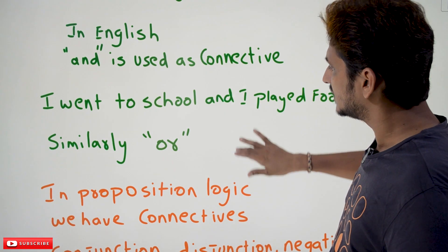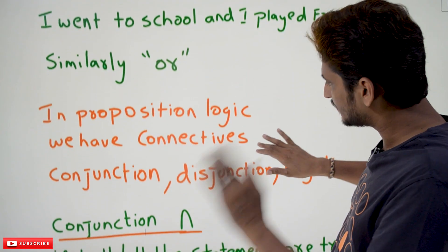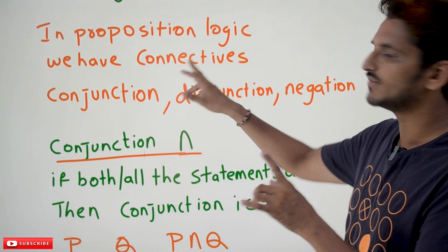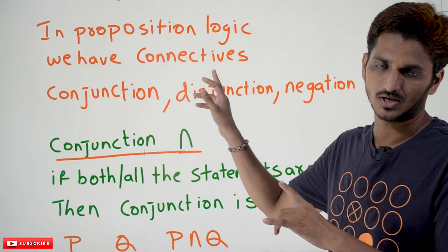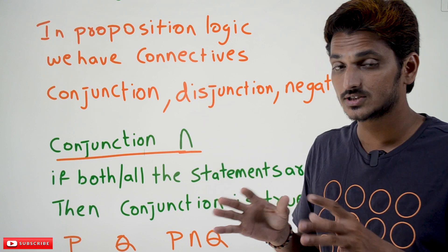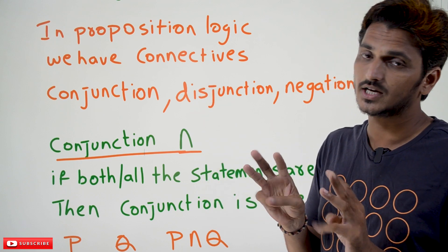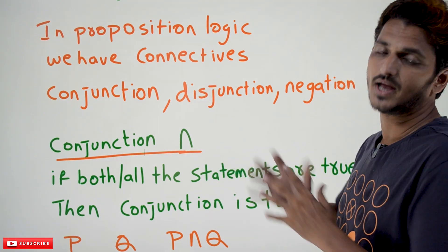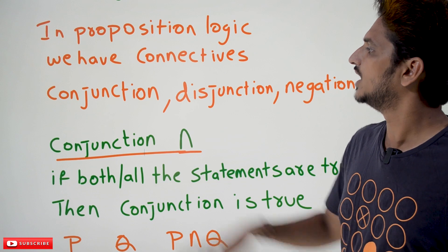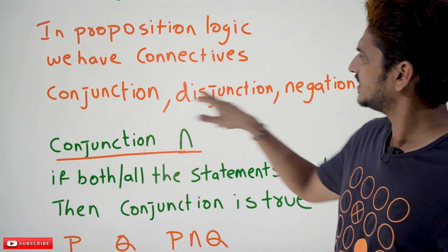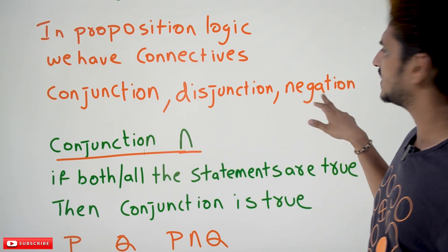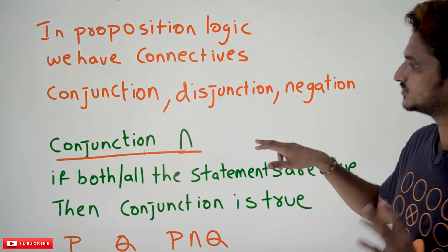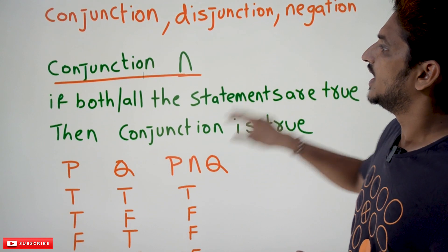Similarly, in propositional logic we have connectives. In this class we are going to discuss three of them; in coming classes we will discuss the remaining connectives. The three connectives we discuss today are: conjunction, disjunction, and negation.